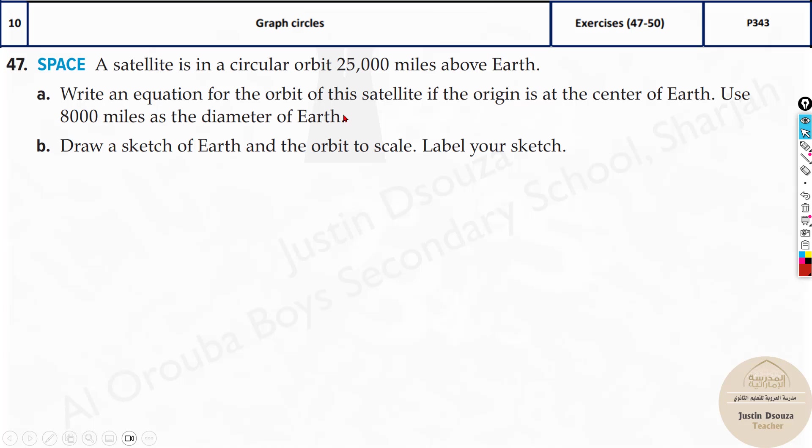Write an equation for the orbit of this satellite. If the origin is at center of earth, use 8,000 miles as the diameter of the earth. So they have told a satellite, imagine this is the satellite rotating, that is 25,000 miles above the earth. Now if I have earth over here, the distance would be 25,000 miles above.